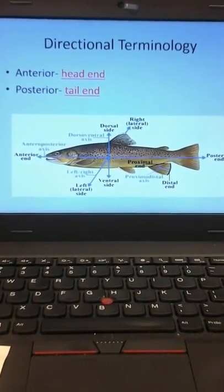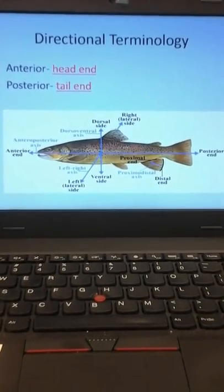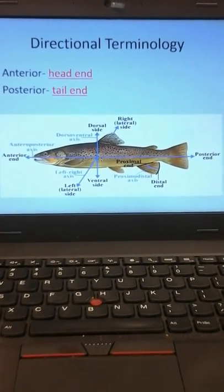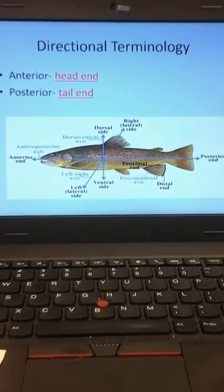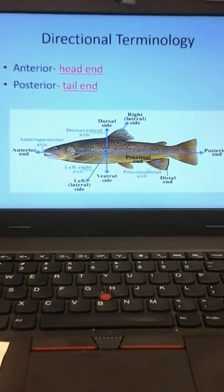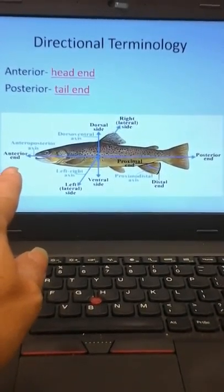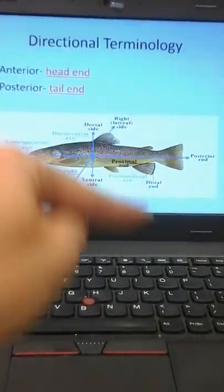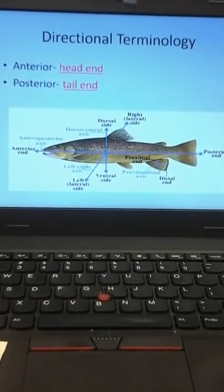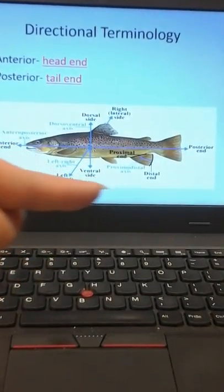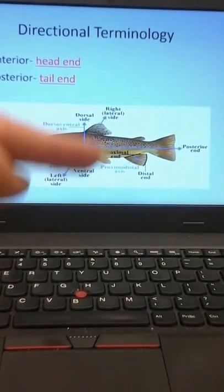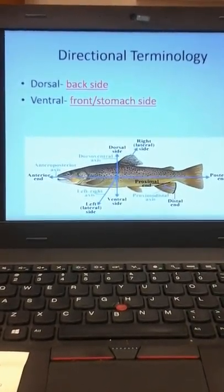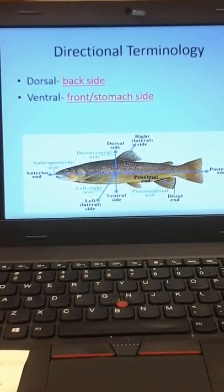Anytime you see anterior, that means towards the head. Posterior means towards your tail — you don't think of yourself as having a tail, but you do have a tailbone. On a fish, the head end is the anterior end and the tail end is the posterior end. If you flip it over, anterior is still the head and posterior is still the tail — that's why we can't use top and bottom anymore. Dorsal is the back and ventral is the front or stomach side. That's why the fin on a fish's back is called the dorsal fin.